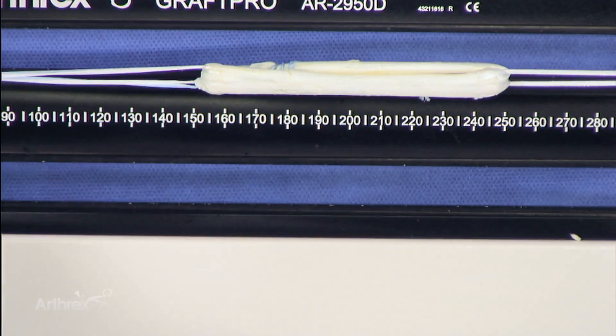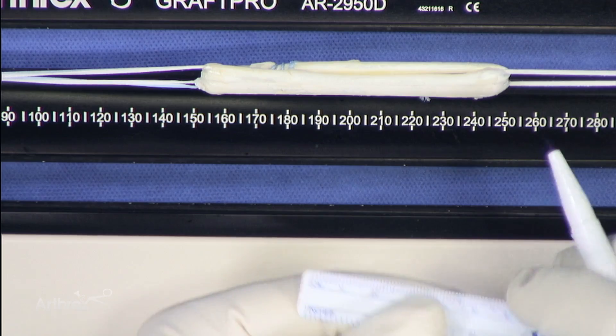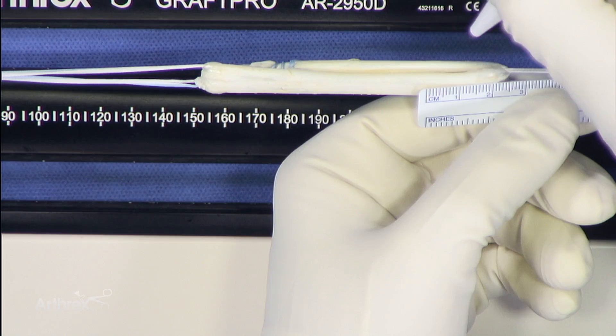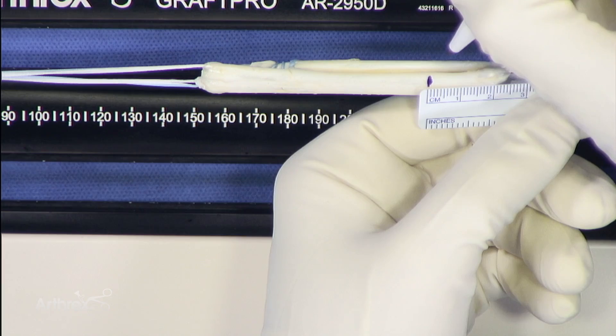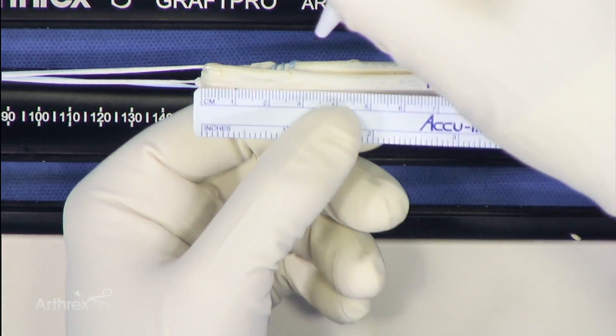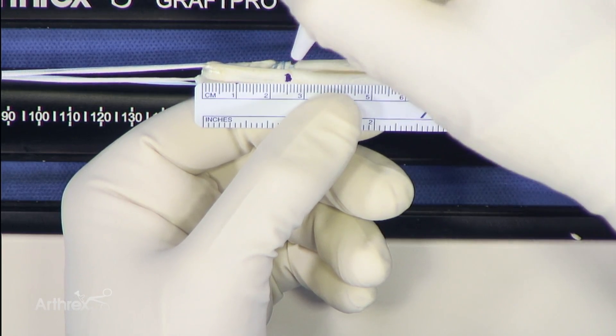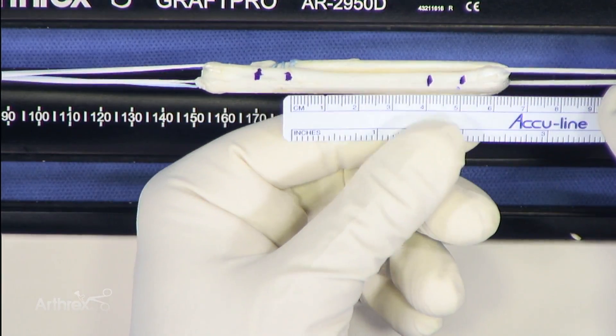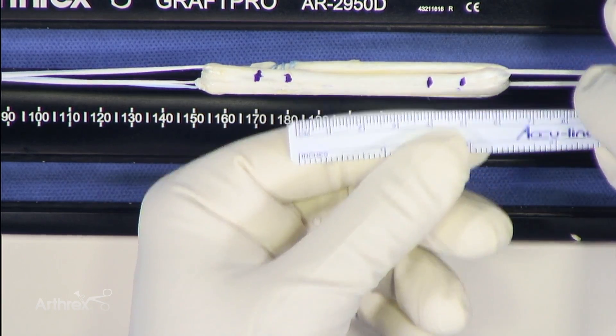For the ACLs, we normally go 20 millimeters in the sockets. For the PCLs, we normally like to go 25. So here I'm going to mark it at 25 and then at 15. And I'll do the same thing here, 25 and 15. And you can see that this is our total intra-articular distance.